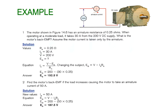Example: A motor has an armature resistance of 0.25 ohms. Operating at moderate load it takes 30 amps from a 200 volt DC supply. What is the motor's back EMF, assuming motor current is taken only by the armature? Listing what we know: R_A = 0.25 Ω, I = 30 A, V = 200 V. We need to find the back EMF.